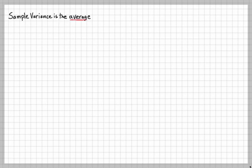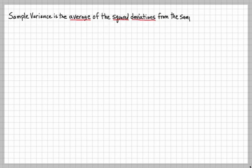Let's define the sample variance. Sample variance is the average — 'average' is a keyword — of the squared deviations — 'squared deviations' is another keyword — from the sample mean. 'Mean' is another important keyword.